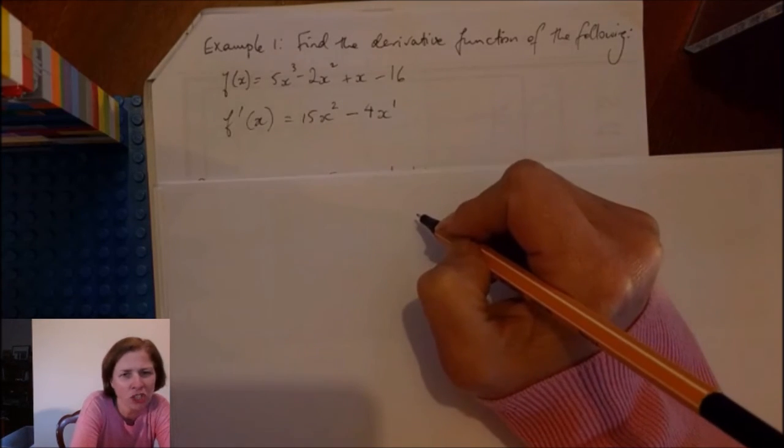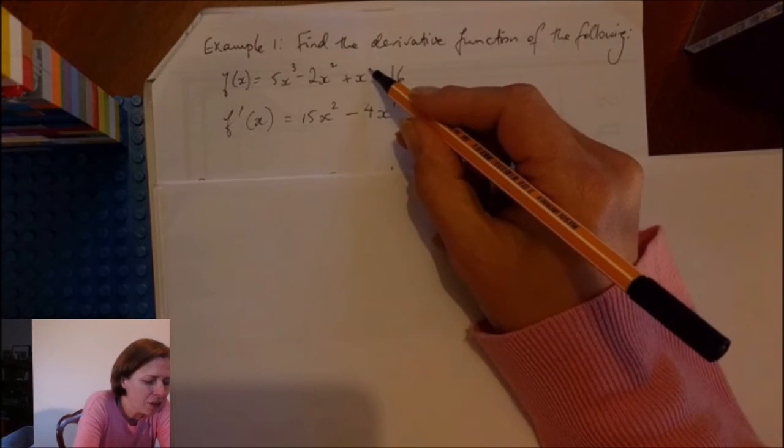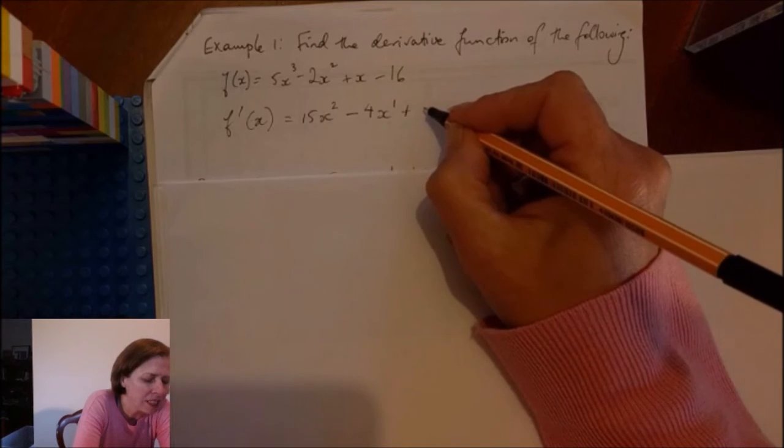That's 1. I wouldn't actually normally write the 1. Same thing here. The power here is 1. The coefficient is 1. So I've got plus 1 times something.